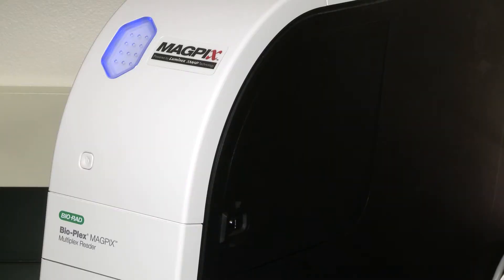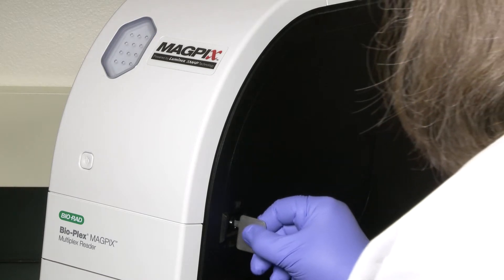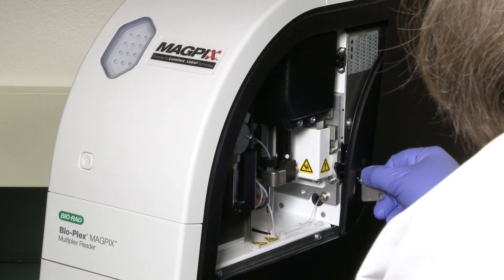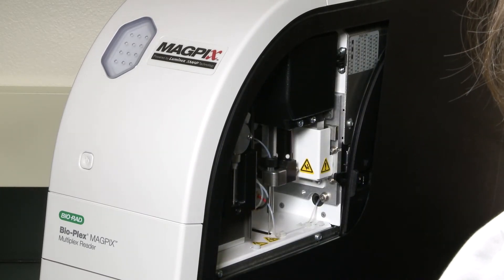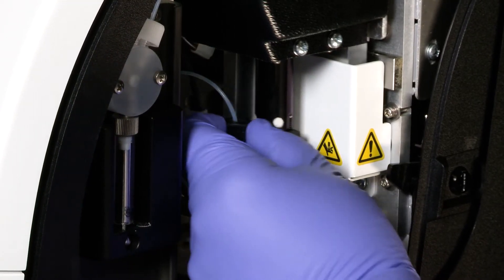To remove the probe, make sure the MagPix Reader is turned off, then open the access panel on the side of the instrument using the door access tool. Unscrew the connector at the top of the probe and remove the probe.